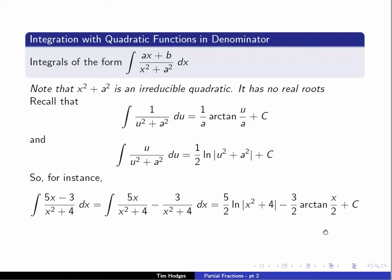Of course, in general it's going to be much more complicated. In particular, there are irreducible quadratics that aren't of the form x squared plus a squared. In general, there will be a real x term in there, such as x squared plus 2x plus 2. What we need to do is complete the square to get the irreducible quadratic in the form u squared plus a squared.